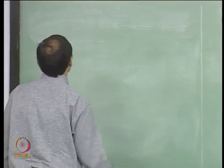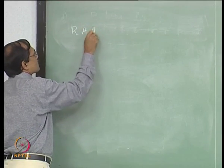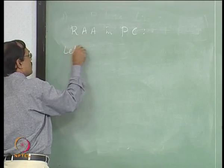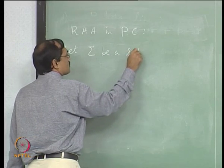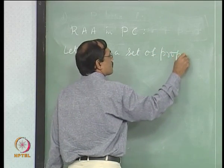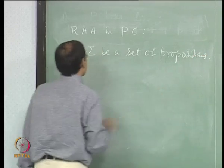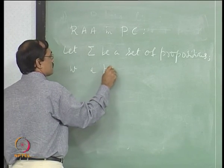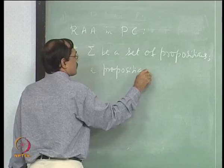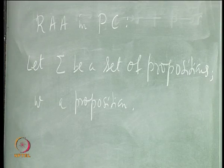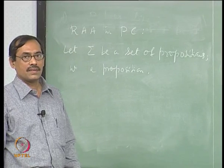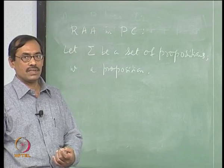Then you can formulate reductio ad absurdum. We take sigma to be a set of propositions and w also a proposition. Sigma entails w if and only if sigma union not w is inconsistent — this is how reductio ad absurdum is formulated in this system.